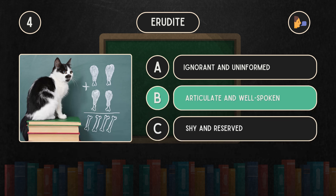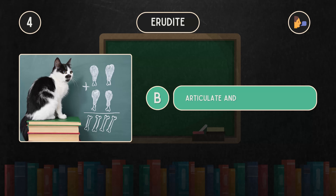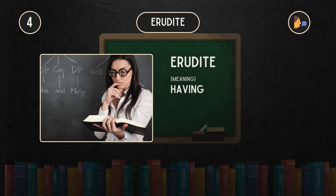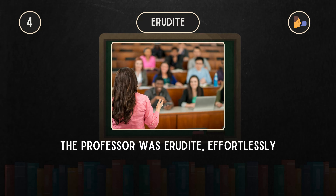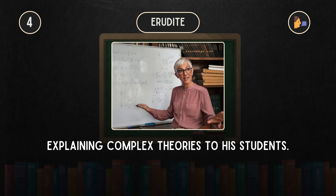B. Articulate and well-spoken. Erudite means having or showing great knowledge or learning. For example, the professor was erudite, effortlessly explaining complex theories to his students.